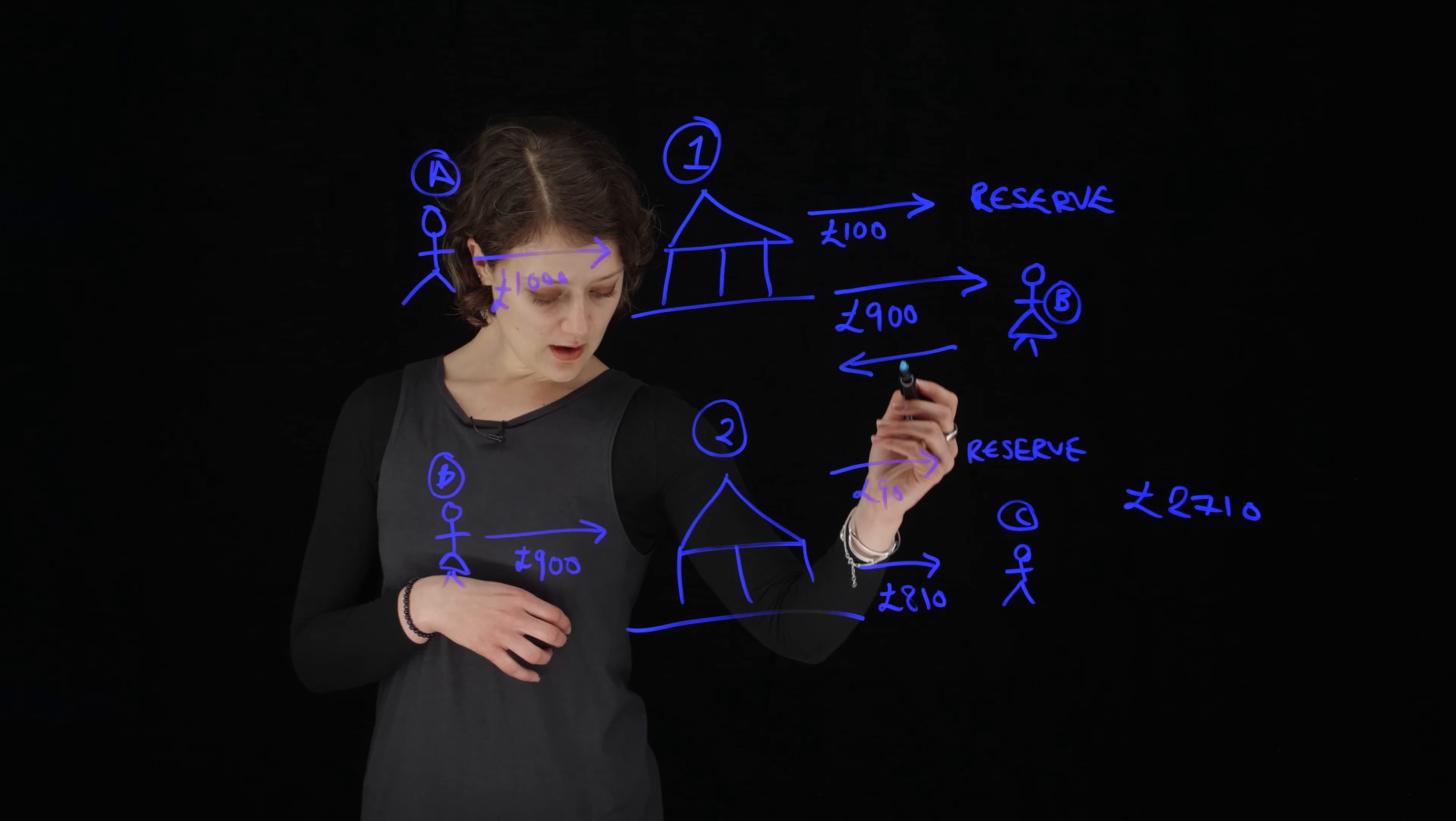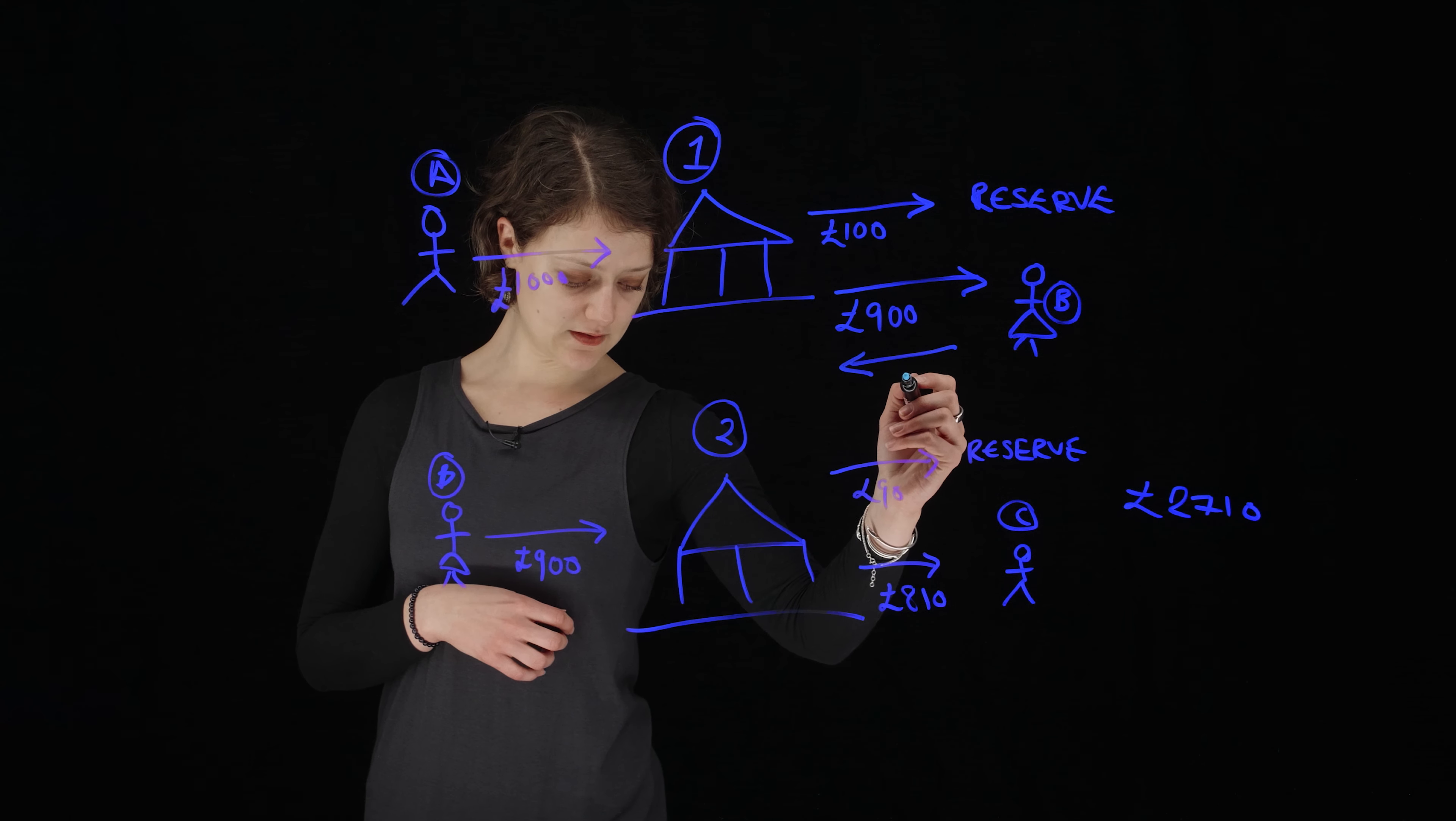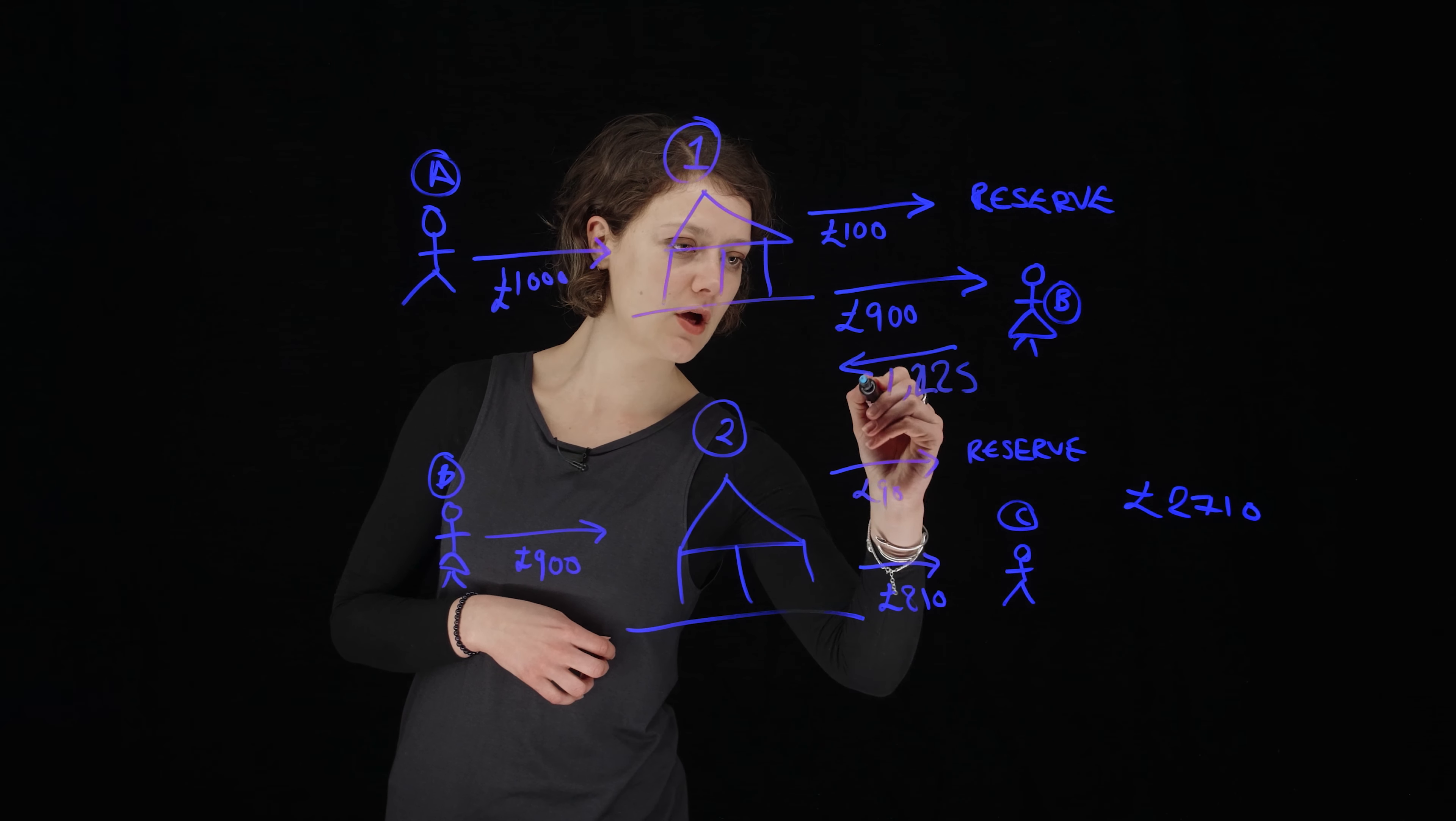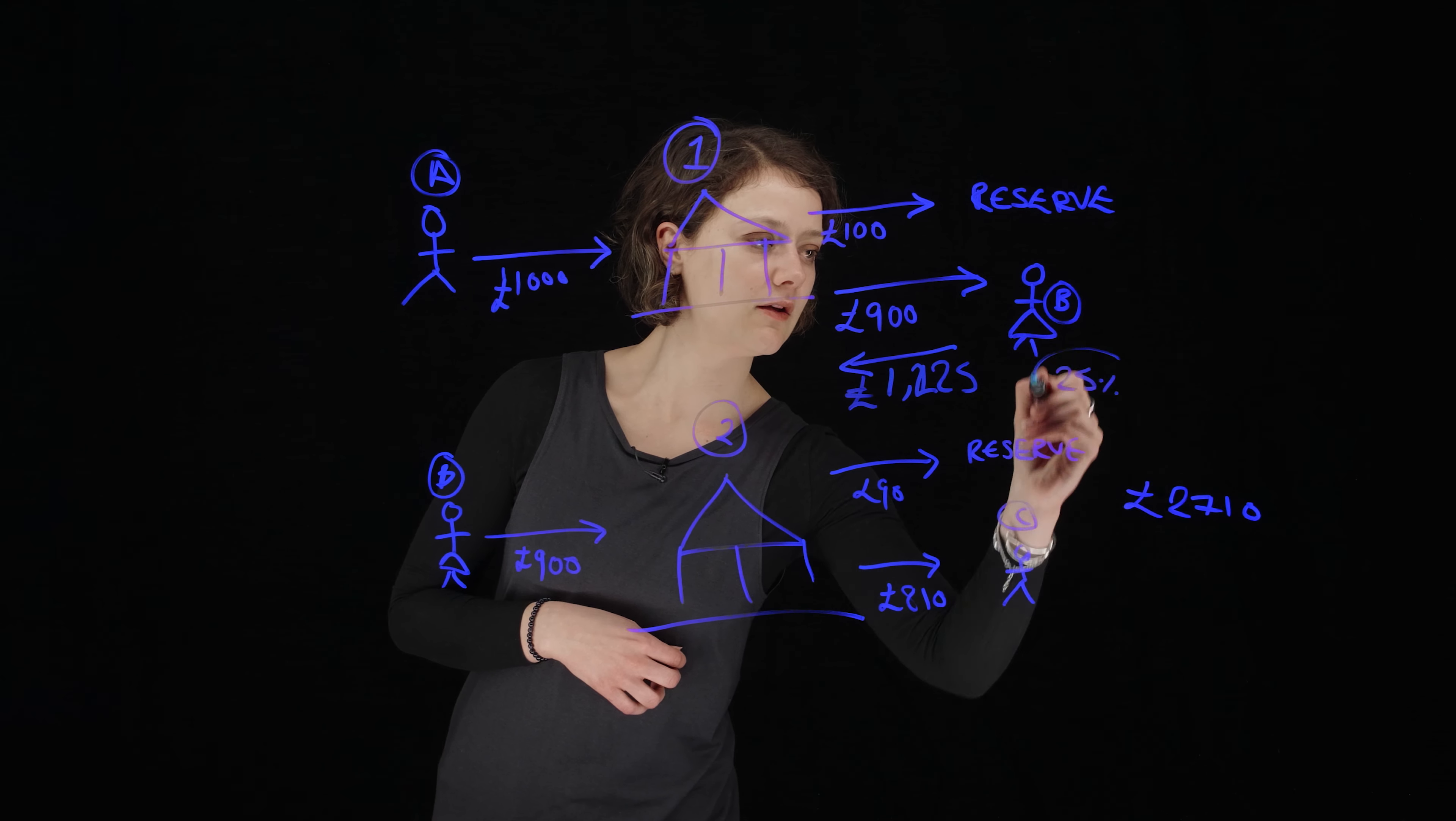So let's say that we've got a borrowing interest rate of 25 percent. So this person is going to be paying back to the bank 1,225, help if I could do my maths. So that's with an interest rate of 25 percent down here.